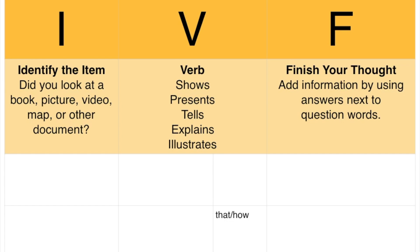When we start to make our sentence, we need to first look at I — identify the item. Did we look at a book, picture, video, map, or other document? Well, we looked at a picture. So I wrote 'the picture.' Next, we need a verb. I can choose any of these: shows, presents, tells, explains, or illustrates. I'm going to choose 'shows.'